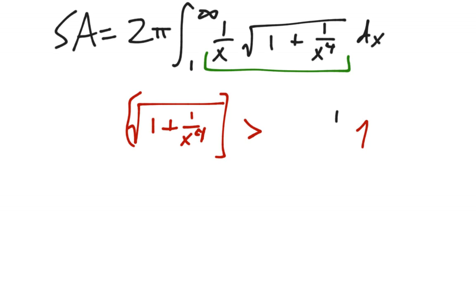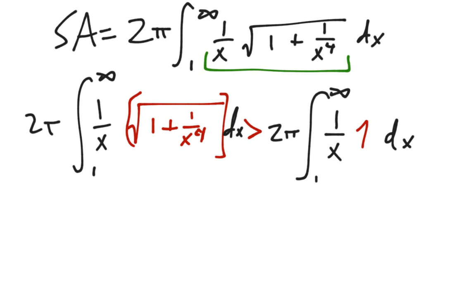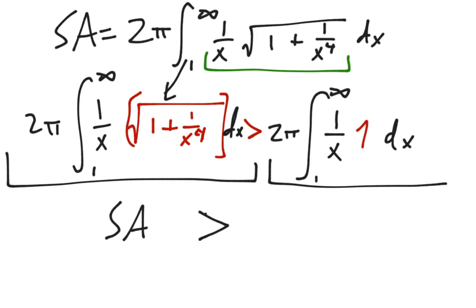Okay, so because this term here has to be greater than 1, therefore, when we put a 1 over x and a dx, 1 over x, and also put an integral, and a 1 to infinity, and a 2 pi, that this integral on the left, which is our surface area, because now it matches that, has to be greater than the integral here.